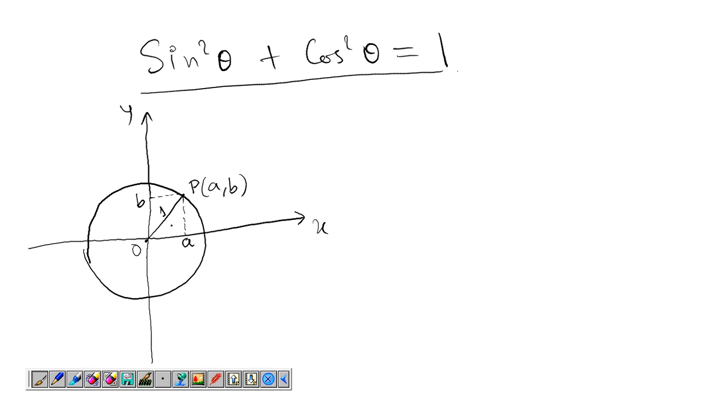So this we have already discussed is one unit. So OP is one unit. Now we will name this vertex or this point as A and this as capital B. So length of OA is a and length of OB is small b.